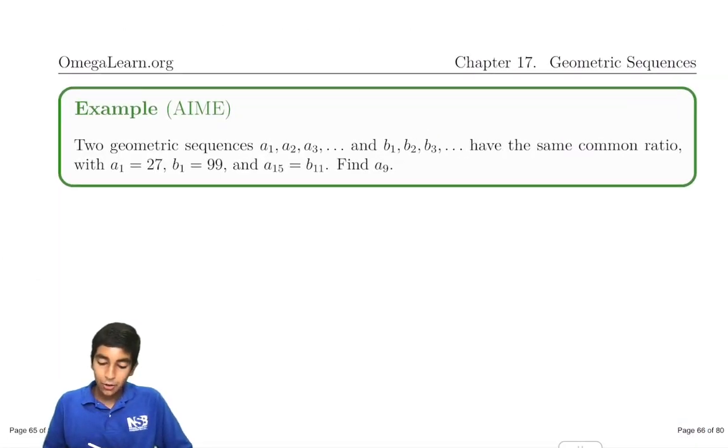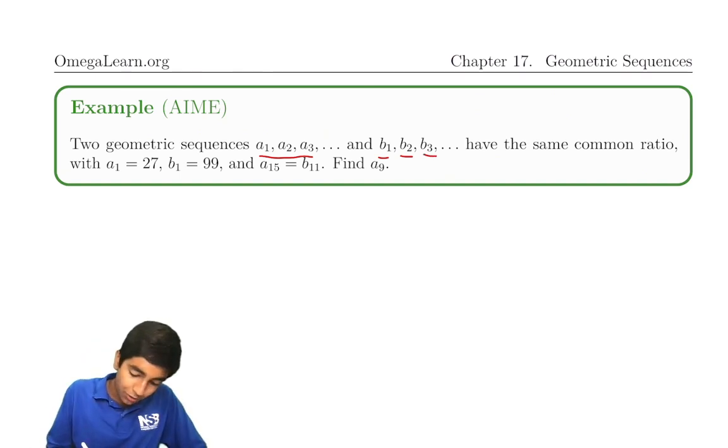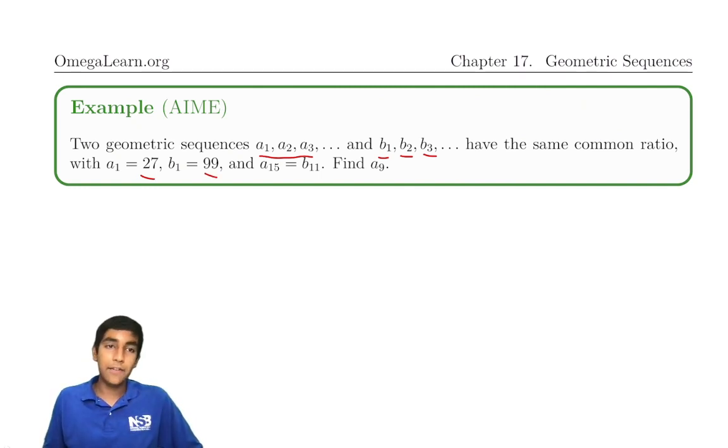Let's take a quick example. Two geometric sequences a1, a2, a3, and so on, and b1, b2, b3, have the same common ratio, with a1 equals 27 and b1 is 99. a15 equals b11. What is a9? First of all, what is the common ratio that's the same? Let's call it r.